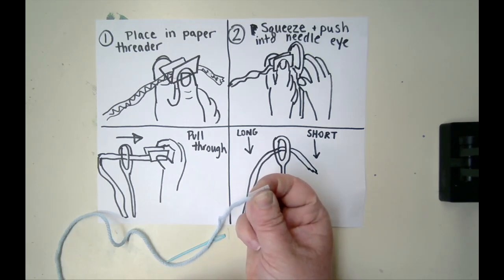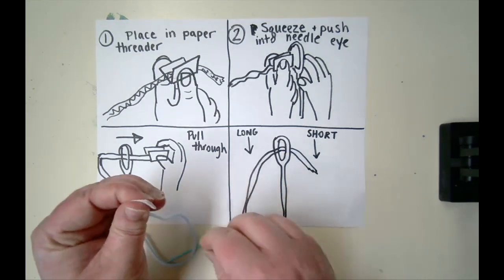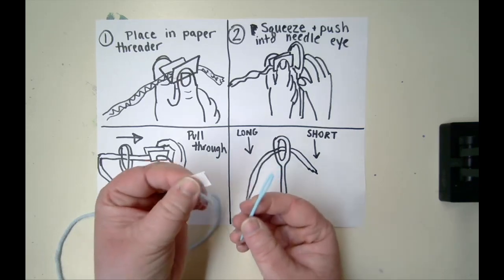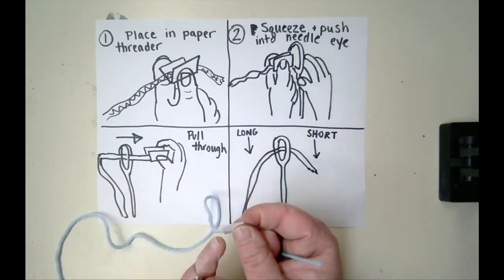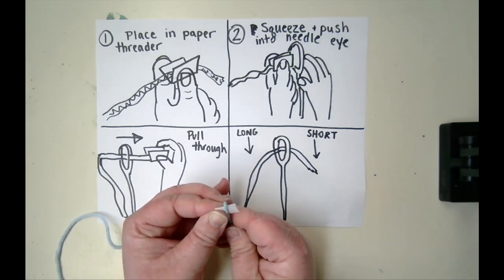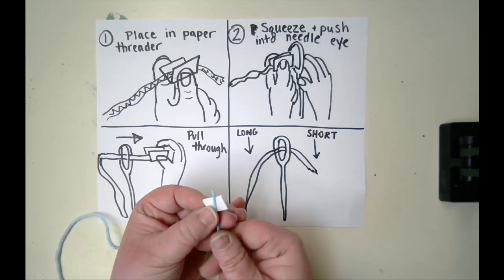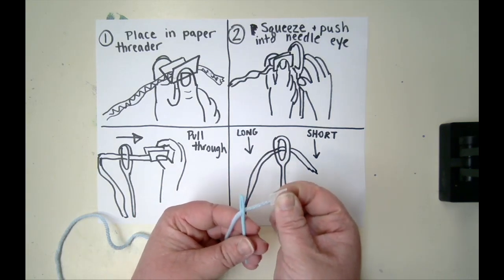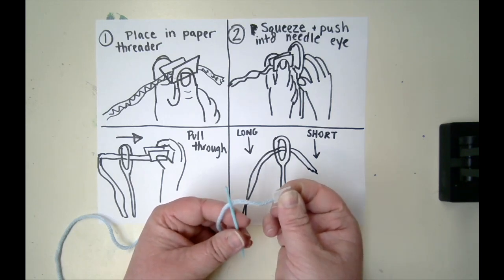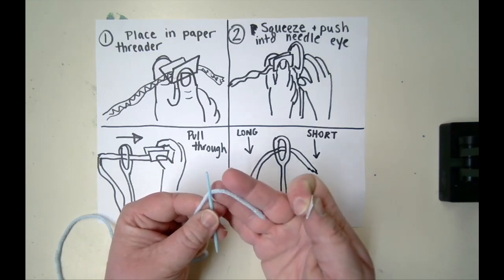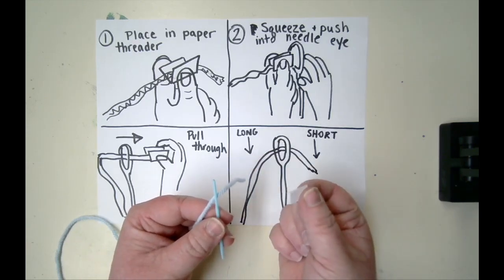Step two, squeeze and push your threader into the eye of the needle. The eye of the needle is the hole. I'm going to take my threader, which is holding my string still, and push it through the eye of my needle. This other hand is going to get the threader and pull. Notice how this left hand is now holding the needle. They just swapped places and I pull it through. Once I've pulled my string through, I can let the threader come off gently.